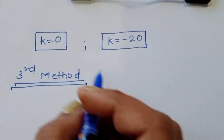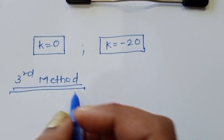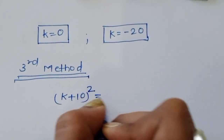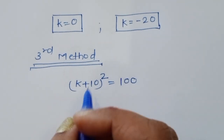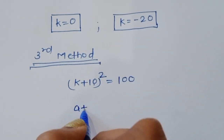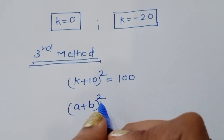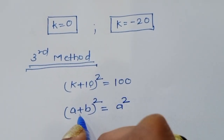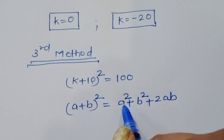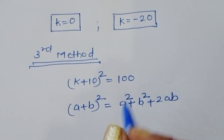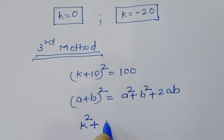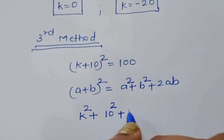Now in the third method, the question is (k + 10)² = 100. We recognize this is the form (a + b)², and the formula is a² + 2ab + b². Here a = k and b = 10, so we substitute to get k² + 10² + 2·k·10 = 100.